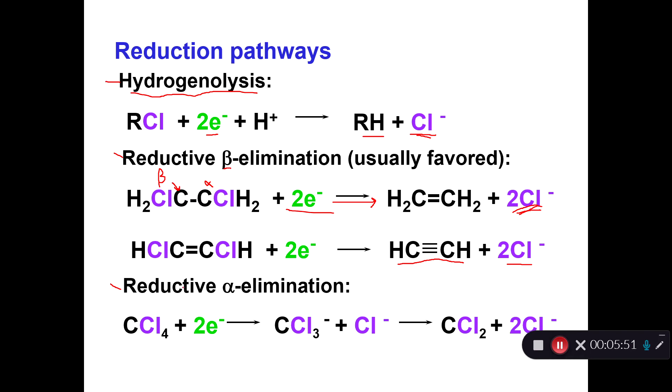You can also have reductive alpha elimination, which is where both of the chlorines are on the same carbon, the alpha carbon. You can kick out two chlorines here, and you get this very odd thing where carbon only has two bonds to it. There's actually a lone pair of electrons here. This odd funky thing is called a carbene. You don't see it very often, but it is possible. These things do form, and there's evidence that they can form even in water, although they will react with the water pretty quickly.